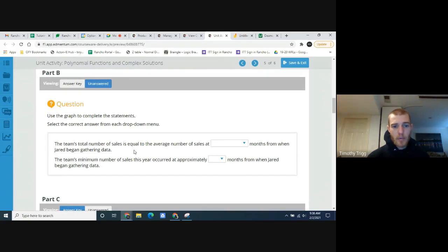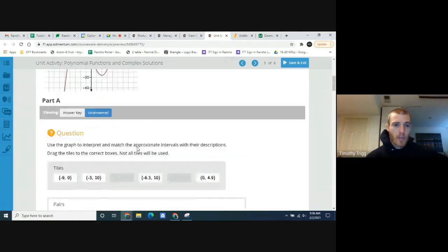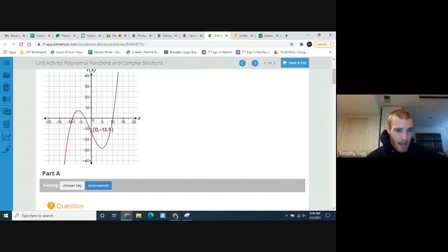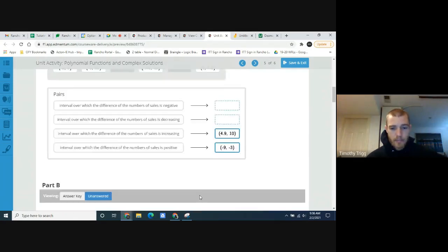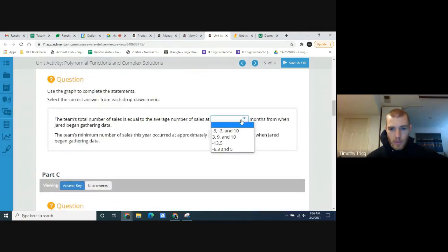The team's total number of sales is equal to the average number of sales at blank months from when Jared began gathering data. For this, they want the x-intercepts. So what are the x-intercepts of this graph? Well, someone's about 9, or negative 9, sorry. Negative 9, negative 3, and 10. So that's what they're looking for.